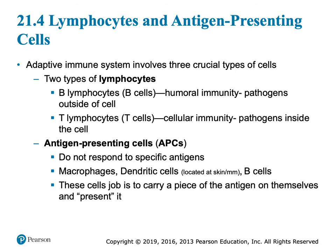Antigen-presenting cells don't respond specifically to a specific antigen. They recognize an antigen, and their job is to chew it up, take a piece of that antigen, put it on their own MHC, and say 'look what I got.' They're going to present it to one of the lymphocyte cells. Antigen-presenting cells are macrophages, dendritic cells, and B cells. Macrophages are more in the deeper tissues like connective tissue; dendritic cells are in epithelial-type tissues. B cells make antibodies which mark something for destruction, but they can also present pieces of an antigen.